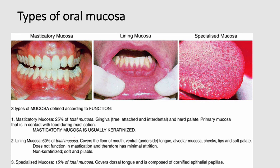In the oral cavity we have three different types of oral mucosa: masticatory mucosa, lining mucosa, and specialized mucosa. The masticatory mucosa forms about 25 percent of the total oral mucosa and is found in the gingiva and the hard palate; its lining epithelium is keratinized. The lining mucosa forms about 60 percent of the total oral mucosa and covers the floor of the mouth, the undersurface of the tongue, alveolar mucosa, cheeks, lips, and the soft palate.